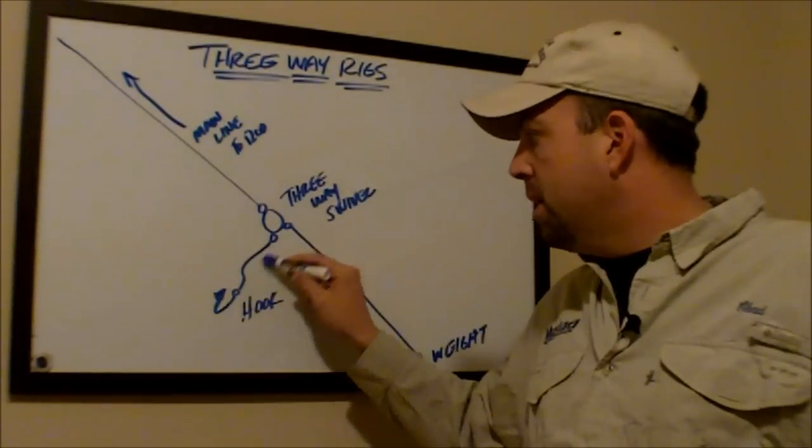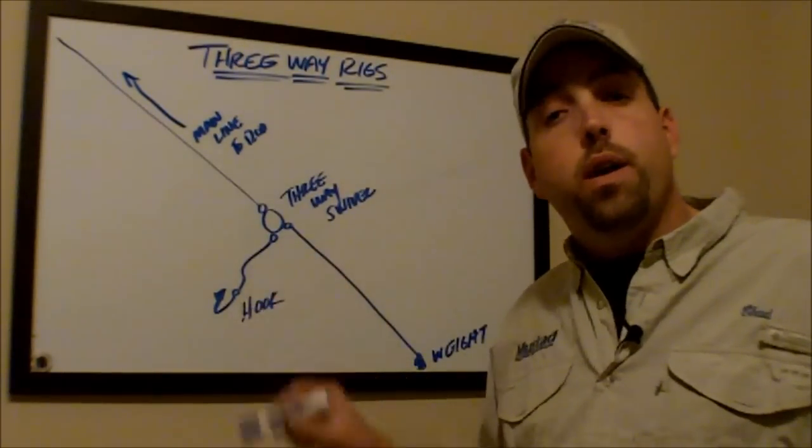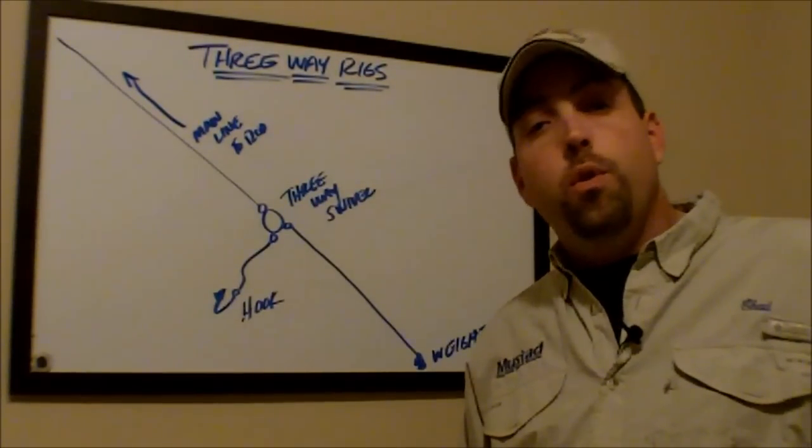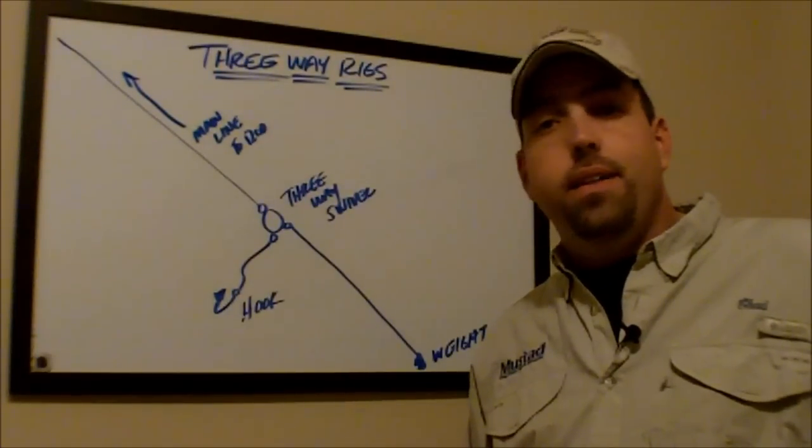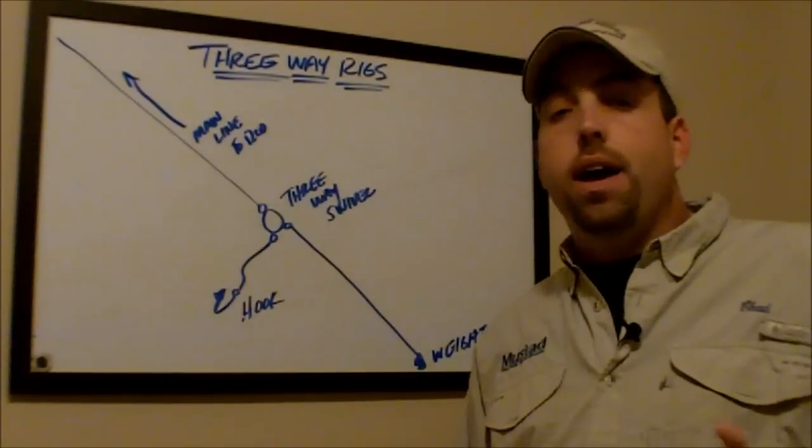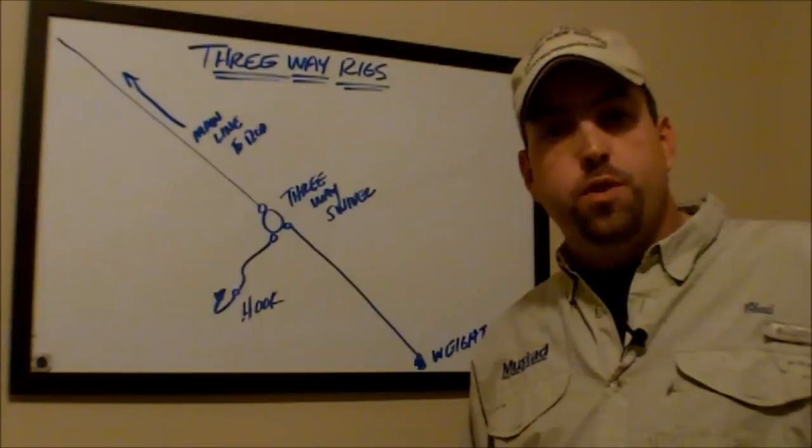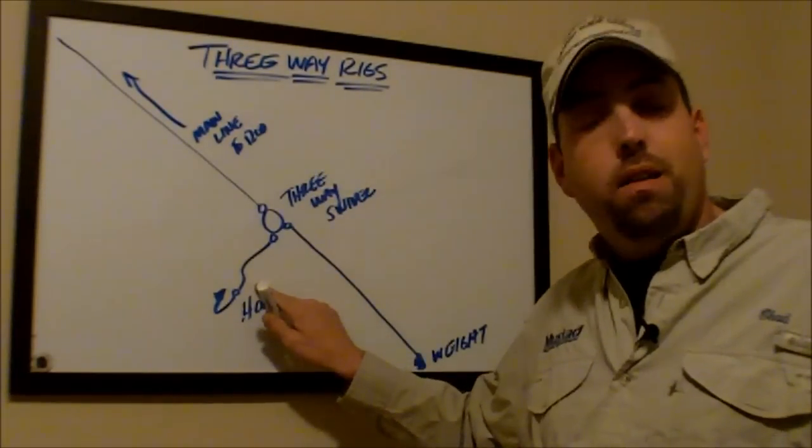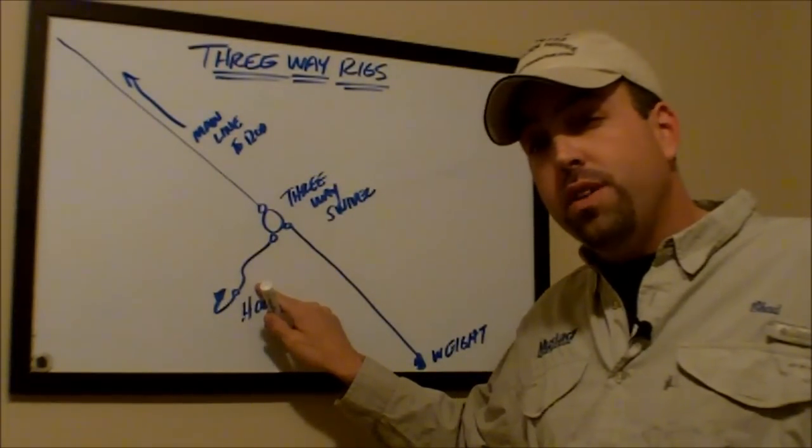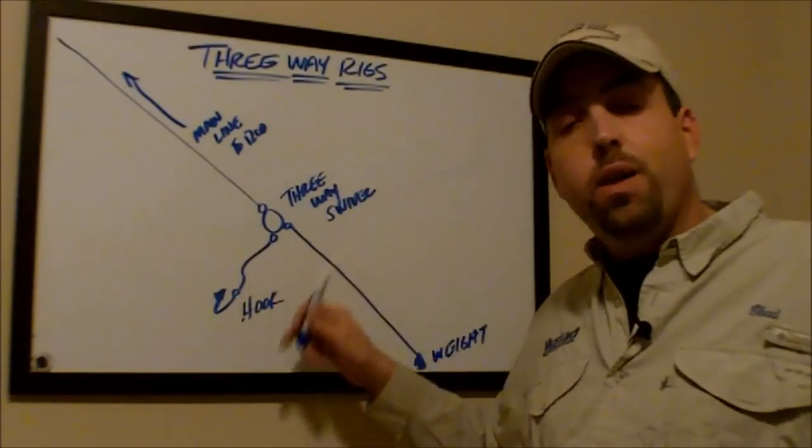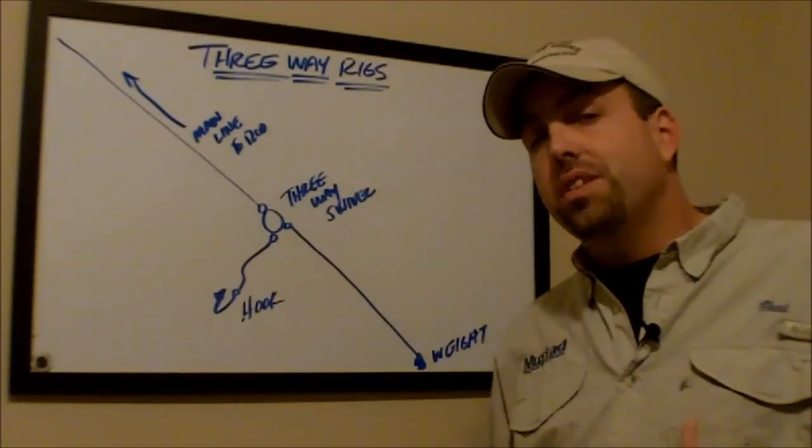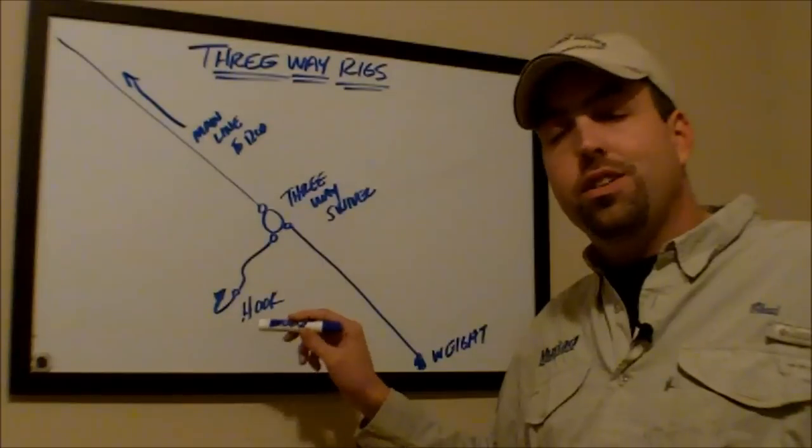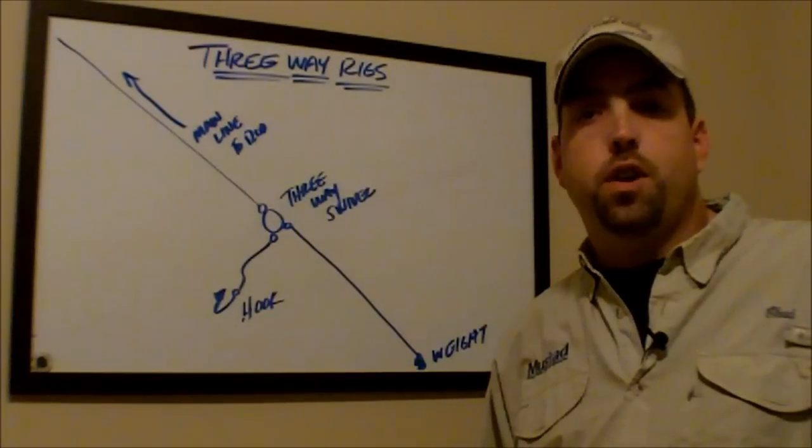I've also had a lot of questions about this leader line that runs off the three-way rig and how long that should be. I would say as a general rule, I'm going to tell you eight to twelve inches, but again, you have to experiment and see what's going to work best for you and the water body that you're fishing in. I find that when I make this leader line longer than about eight to twelve inches that I have issues with it getting tangled up and it just kind of comes into a big mess, which even with that line being shorter, I still have issues with this getting tangled up.